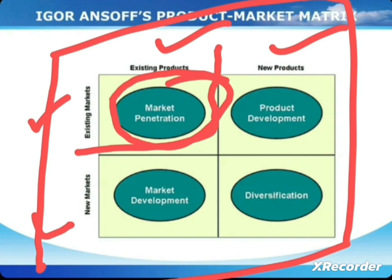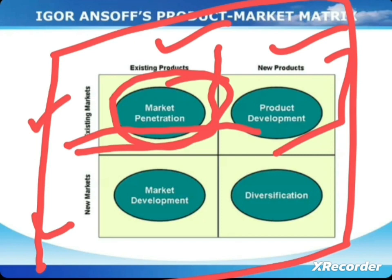The second quadrant is product development. In product development, the company has an existing market but adds a new product. When a new product is added, the customers for that product increase and the company can expand its business. So product development involves introducing a new product while remaining in the same market.